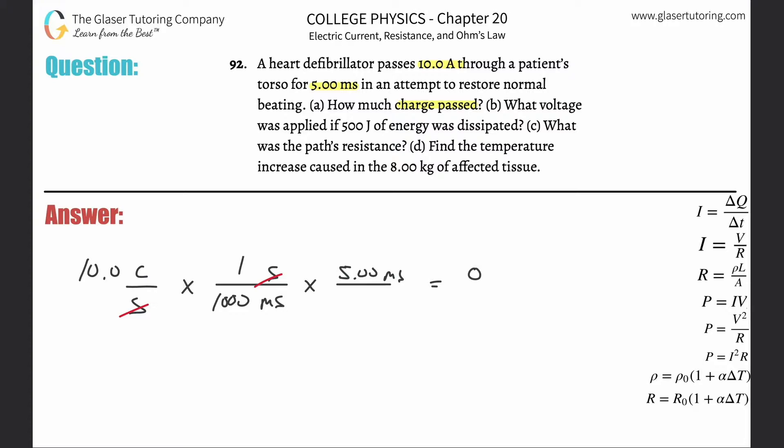So this works out to be 0.05, I guess sig figs 2, 3, whatevs, and that's going to be in coulombs. So that's how much charge. That takes care of letter A.